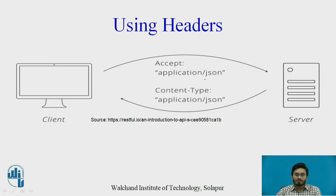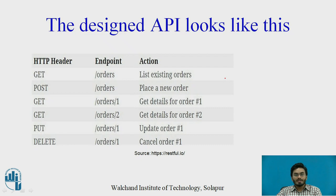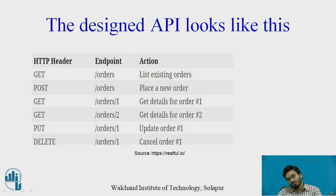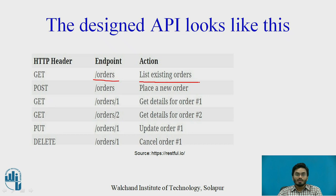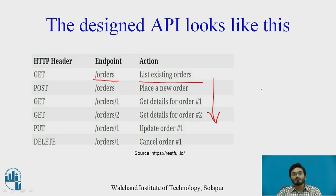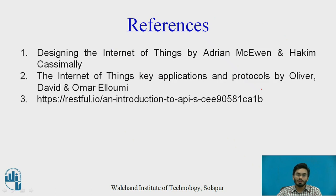This is how the communication happens. As an example, if we wanted to design an API for our own website — using the same pizza ordering example — this is how it would look: whenever I want to get some data from the website, I'm going to put the IP address of the site like 'www.example.com/orders.' Whenever the web server finds that I am requesting '/orders,' it is going to show me the list of existing orders I have already given. Similarly, the rest of the operations work in this way, and this is how we actually generate an API. These are the references used for this presentation.